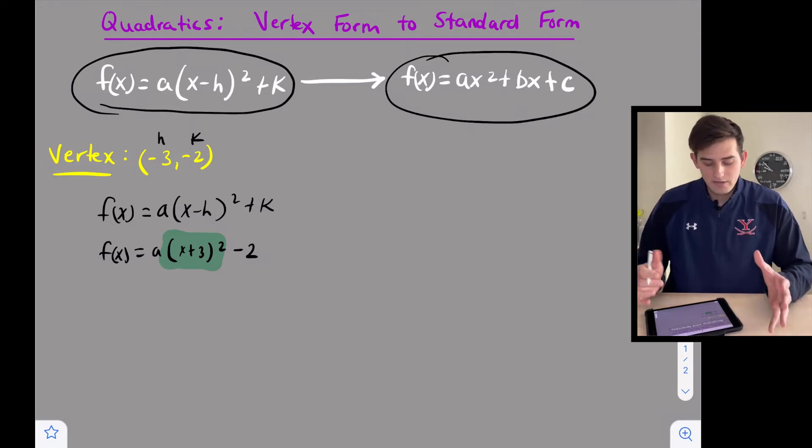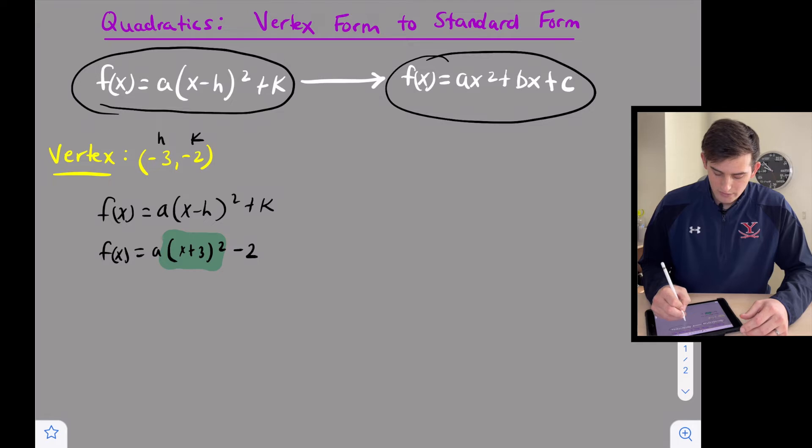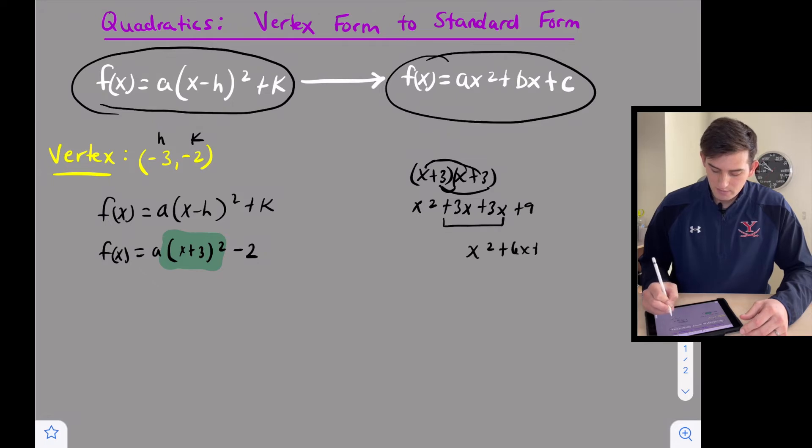If you don't remember the pattern then you can always just go over here and foil it. So let's say we have (x + 3)(x + 3). So we get x² + 3x + 3x + 9. Combine in the middle so we get x² + 6x + 9.